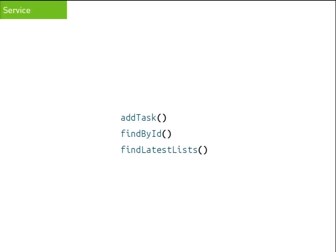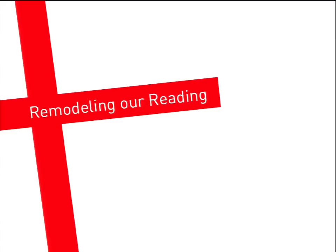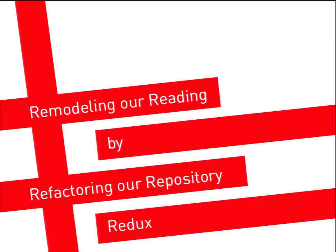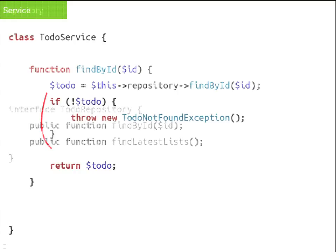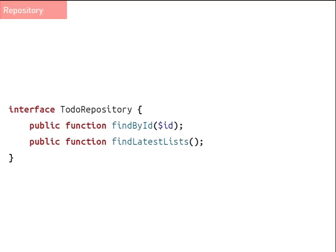If we look at our service, we can break things down into two categories: write methods that change something, like addTask, and read methods like findById or findLatestList. The reads outnumber the writes, so let's give them attention first. We're going to remodel our reading by refactoring our repository. The issue is that the service layer has some code that's basically adding behavior — like exception throwing — which we want to try and get out. The question is where should it go? We're using a repository or database layer that doesn't throw exceptions when something is not found, and we need to shoehorn that behavior in. Oh wait, we can just create objects that work how we think they should.